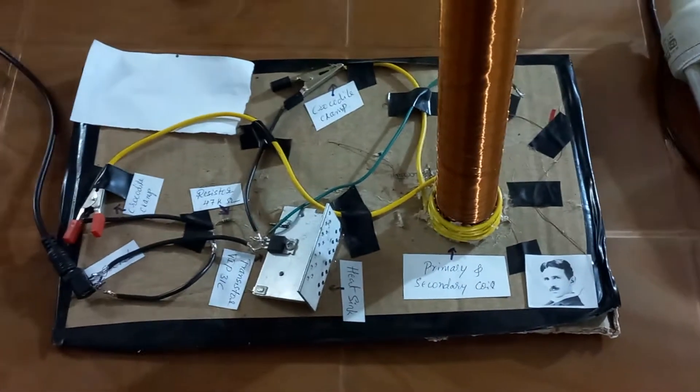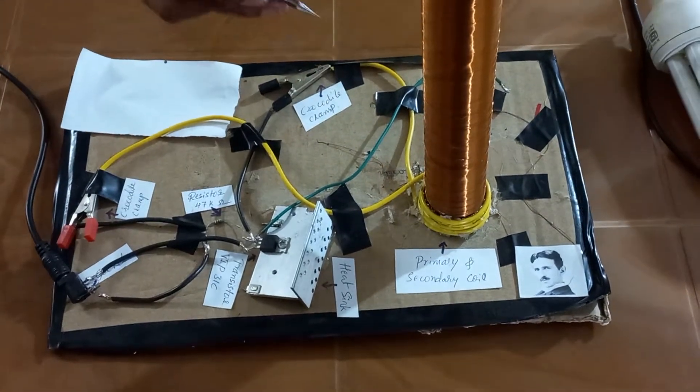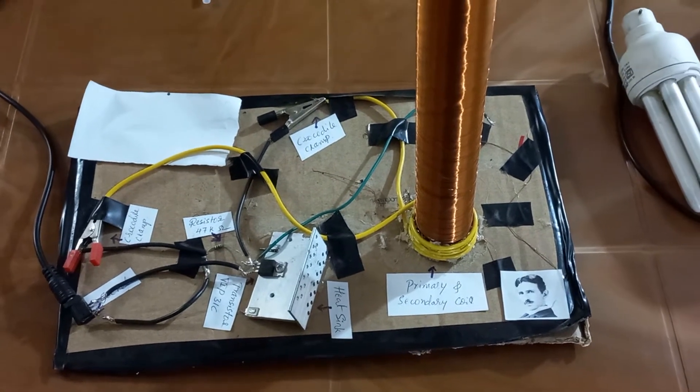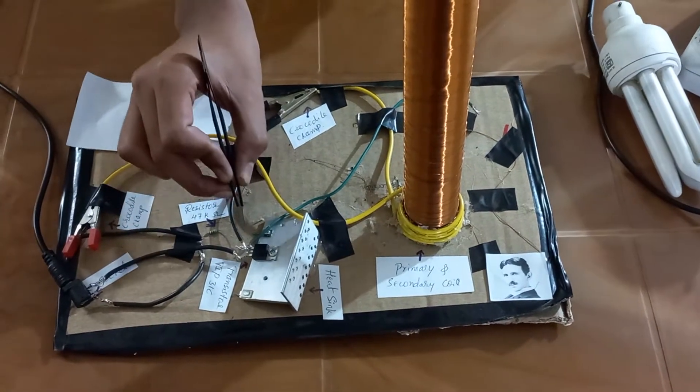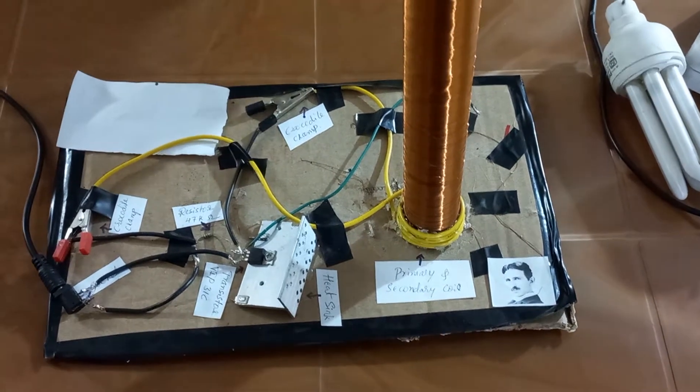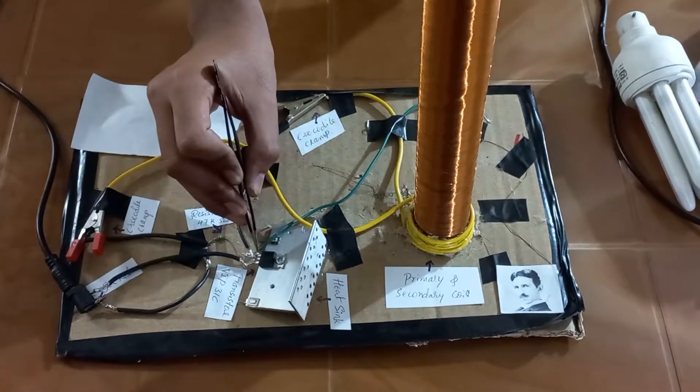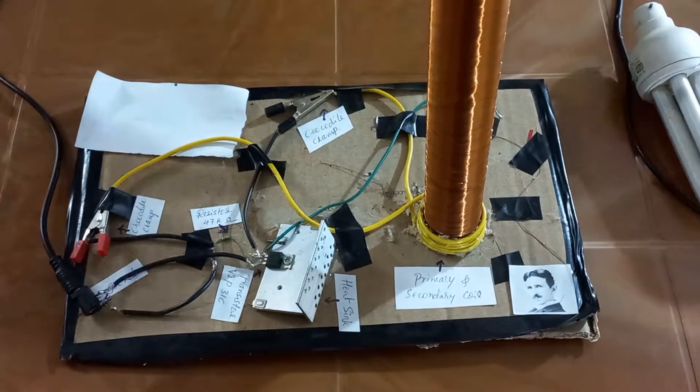When this primary coil and the secondary coil are arranged coaxially to form a resonant transformer, and when we supply positive to the base of the transistor, it turns on the supply. And when we supply negative to the base of the transistor, it turns off the supply.